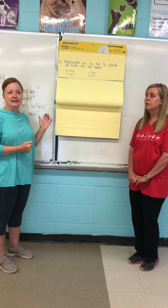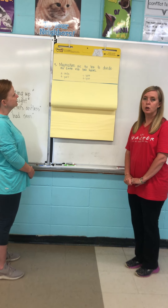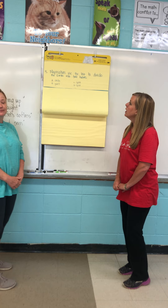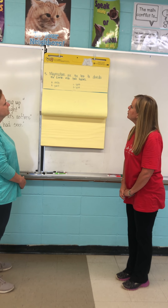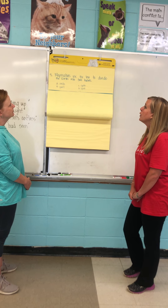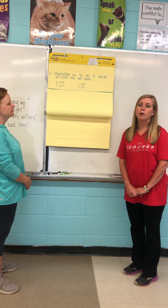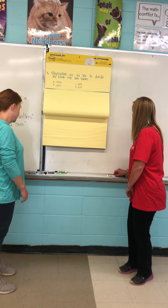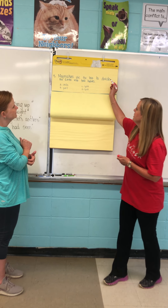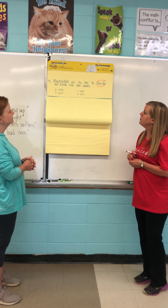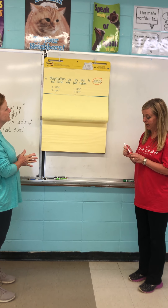We're going to skip down to number three in your packet. There's no story, no passage, so you're strictly using context clues from your sentences. Number three: map makers use the line to divide the earth into two halves. We're supposed to figure out the meaning of the word divide as used in this sentence. The first thing we're going to do is go back to our sentence, find the word, circle it, and read it again. Map makers use the line to divide the earth into two halves.